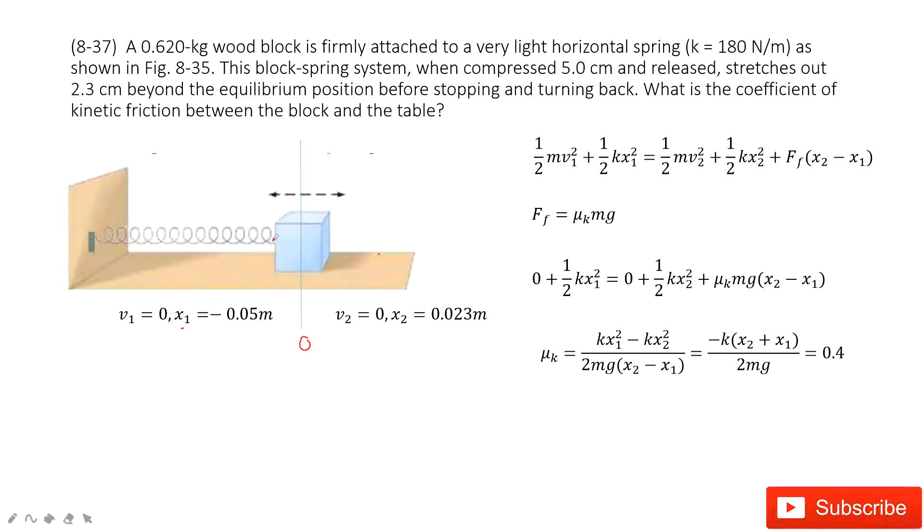And so this is a very simple problem, right? The box connected with spring just moves backwards. We need to find the coefficient for kinetic friction.